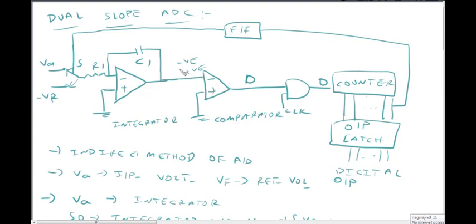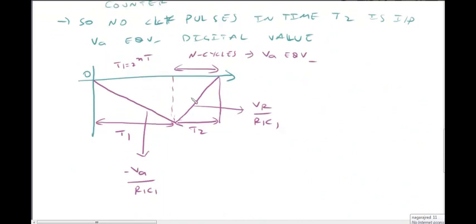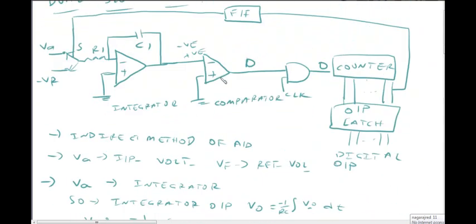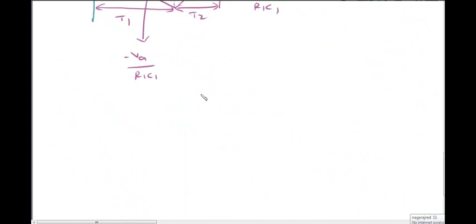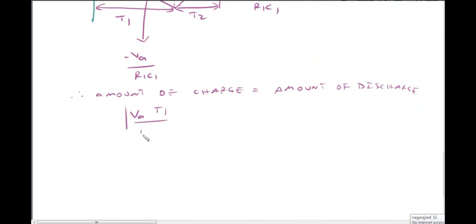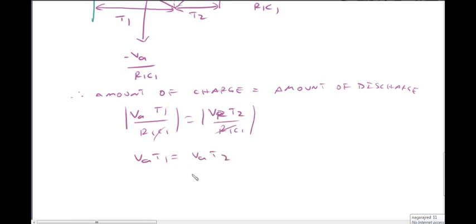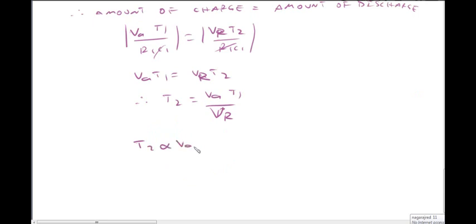When the integrator output returns to zero, the comparator output automatically resets, and we repeat the next cycle. The amount of charge equals the amount of discharge. So: modulus of Va times T1 divided by R1C1 equals modulus of VR times T2 divided by R1C1. Cancelling R1C1, we get Va times T1 equals VR times T2. Therefore, T2 equals Va times T1 divided by VR. So T2 is directly proportional to input voltage Va.